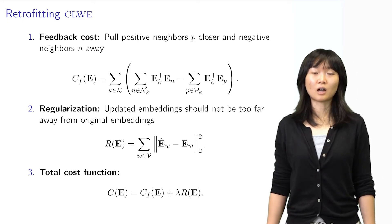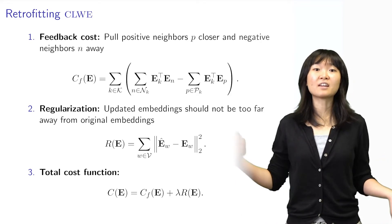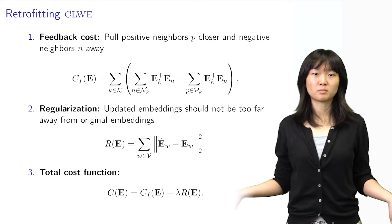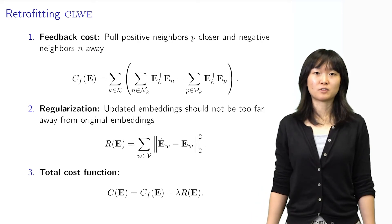Altogether, the cost function consists of the feedback cost and the regularization term. We update the embeddings by minimizing this cost function.